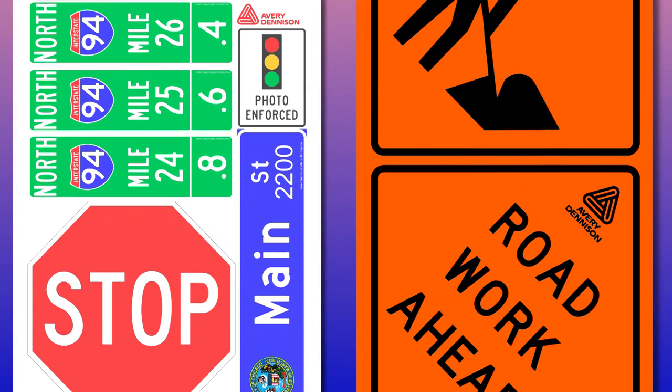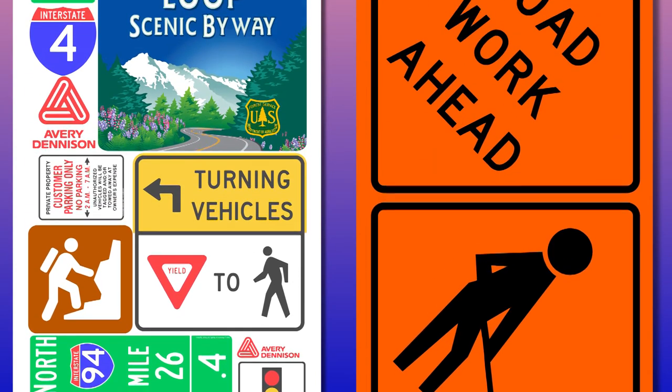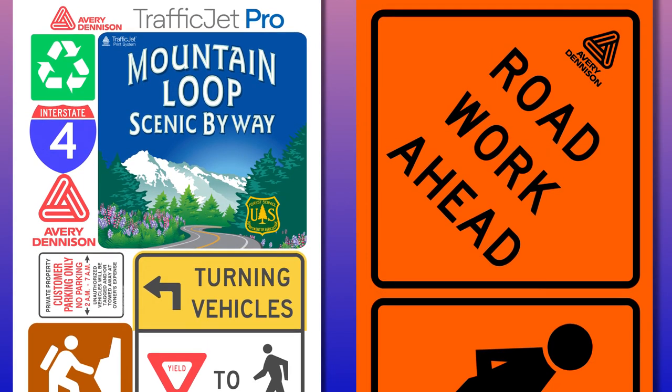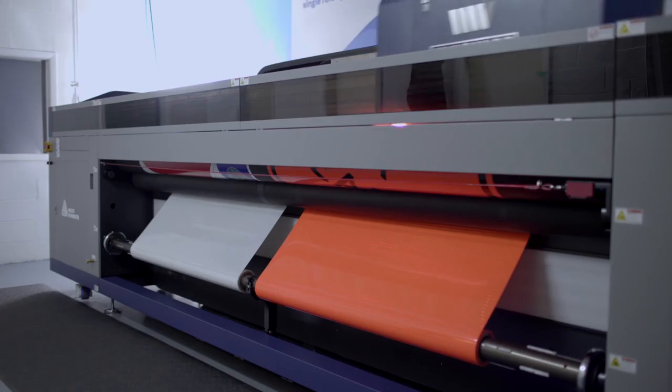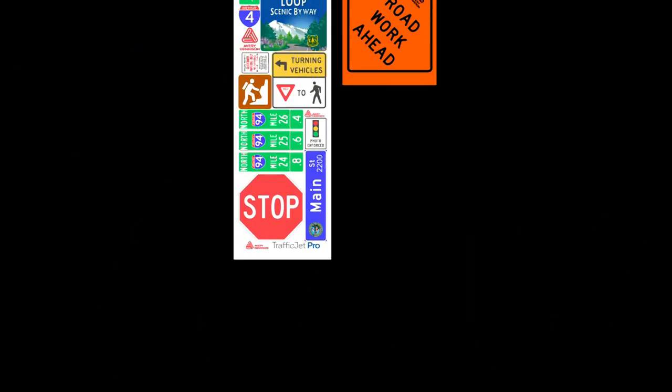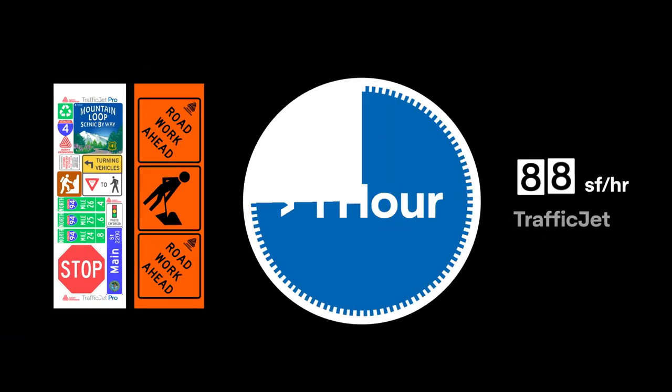In this video, on the fluorescent orange roll, we are running three 48 inch by 48 inch work zone signs and on the white roll, we are running an assortment of traffic and touristic signs. In total, this print job is 96 square feet. The original TrafficJet printer printed 88 square feet per hour, which would mean this print job would have taken over an hour to complete.